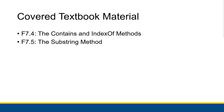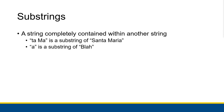A substring is a string completely contained within another string. More accurately, it's a string whose characters are completely contained in the correct order within another string. For example, 'ta Ma' with an uppercase M is a substring of 'Santa Maria' — you can see 'ta Ma' in the middle of 'Santa Maria'. However, 'ma ta' would not be a substring of 'Santa Maria'. All the characters are there, but they're not in the right order, which means it's not actually a substring.